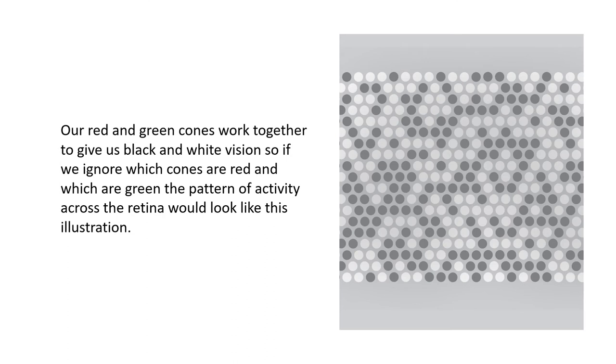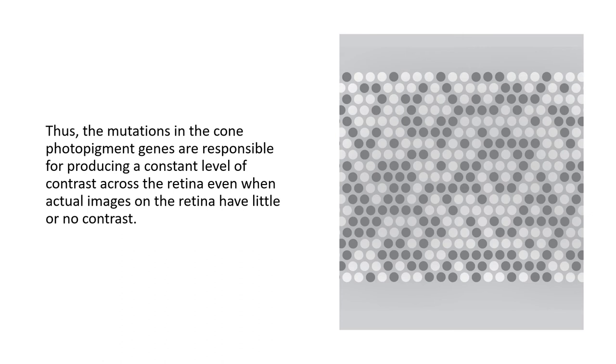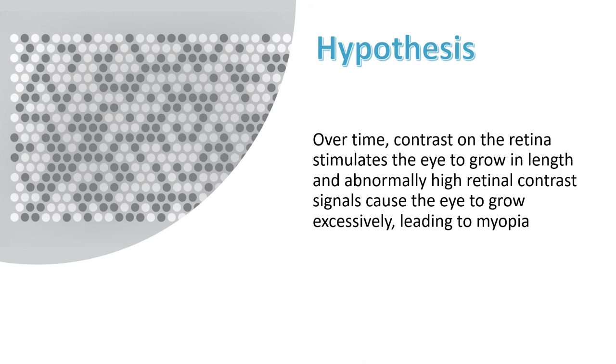Our red and green cones work together to give us black and white vision. So if we ignore which cones are red and which are green, the pattern of activity across the retina would look like this illustration where light dots are normal cones and the dark dots are mutant ones. Thus the mutations in the cone photopigment genes were responsible for producing a constant level of contrast across the retina even when actual images on the retina had little or no contrast. It was extremely surprising that this was the cause of extremely pathological high myopia, and that this same contrast effect is the major genetic contributor to common school-age myopia. Our new hypothesis is that over time contrast on the retina stimulates the eye to grow, and abnormally high retinal contrast signals cause the eye to grow excessively leading to myopia. We call this the contrast hypothesis of myopia.